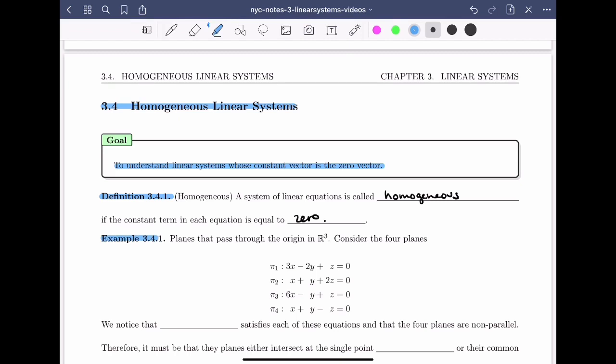Example 3.4.1: Planes that pass through the origin in R3. Consider the four planes: Pi 1, which is 3x minus 2y plus z equals zero; Pi 2, which is x plus y plus 2z equals zero; Pi 3, which is 6x minus y plus z equals zero; and finally Pi 4, which is x plus y minus z equals zero.